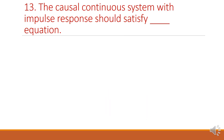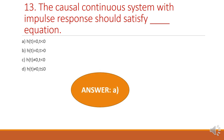Next question: the causal continuous system with impulse response should satisfy which equation? Causal means H of t equals 0 for t less than 0, meaning there is only a right-hand side sequence and no left-hand side sequence. For t less than 0, its value is equal to 0. Therefore option A is the right answer.